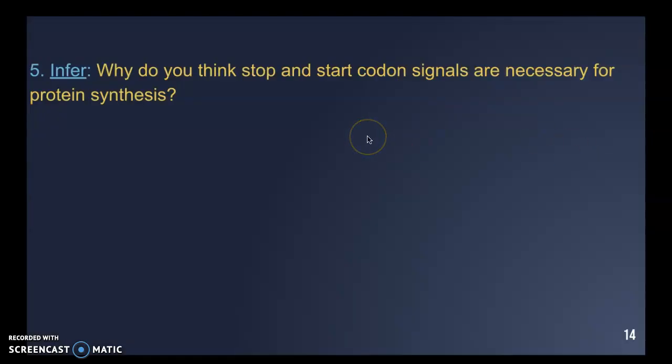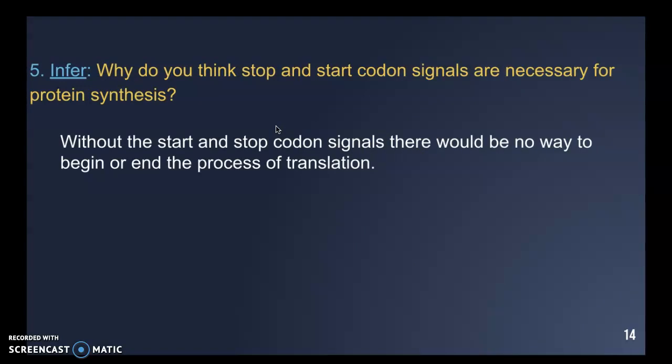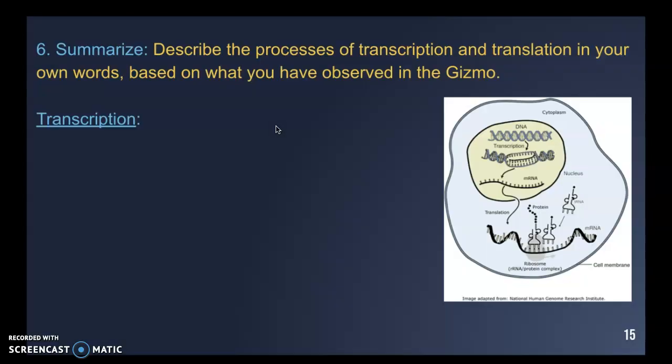Number five asks: why are stop and start codon signals necessary? Without those signals there would be no way to know where to start making the protein or where to stop. It's like a set of directions — if you don't have blueprints, you won't know where to start or whether you've used all the correct parts. We need those signals to guide the process.